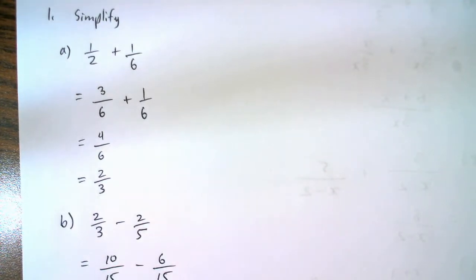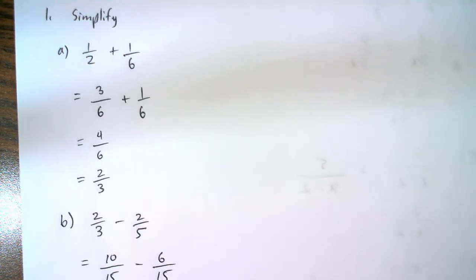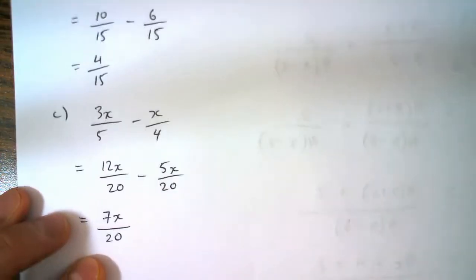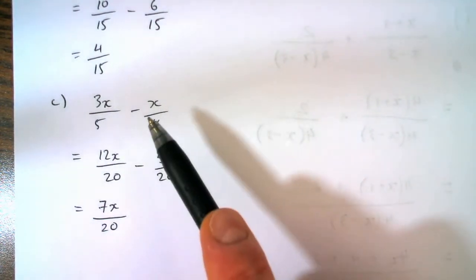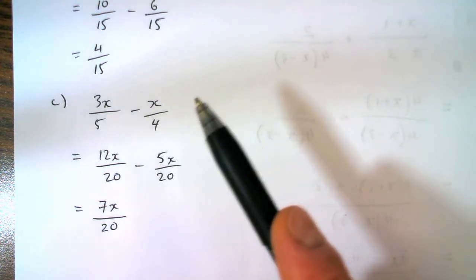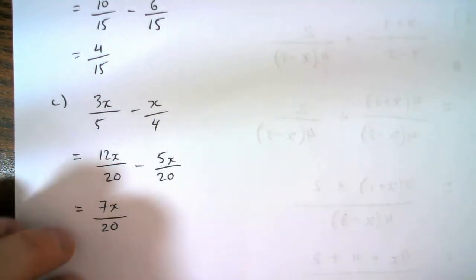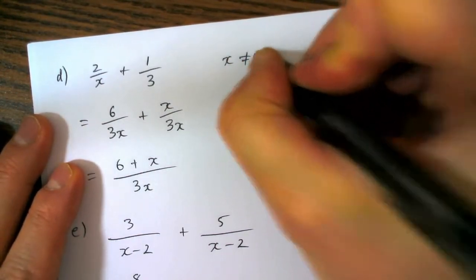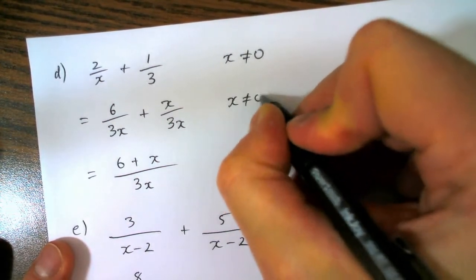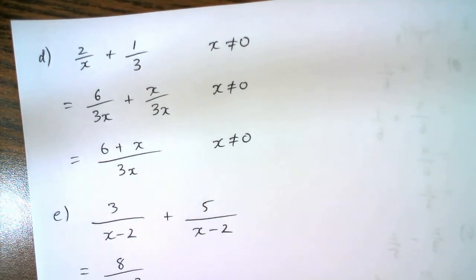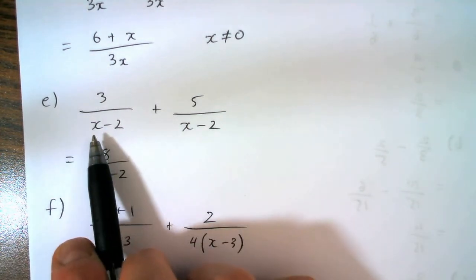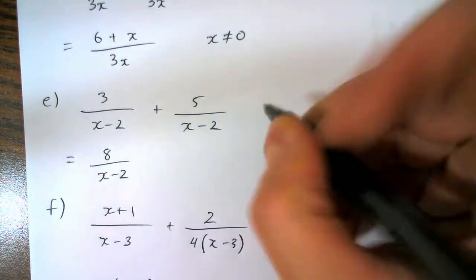Now I'm going to go back and state restrictions on the variable. There is no variable x in the original expression here that we're simplifying, so there can't be any restrictions on it. Same in this situation — if we look at this expression, x can be zero and that's fine, we don't have any division by zero problems. However, in this situation we cannot allow x to be zero, and we write that for all of our steps. In this situation, if x is equal to two then two minus two would be zero and we'd be dividing by zero, so therefore x cannot be two.